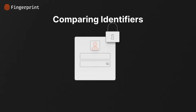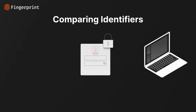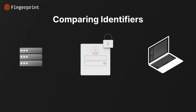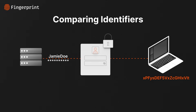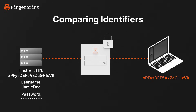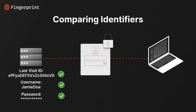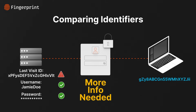An example of the first pattern is reducing login friction. Simply generate an identifier at login time and compare it to the last identifier you saw for the user. If they match, great — log them in without any additional verification or friction. If not, then prompt for more information and make sure it's really them.